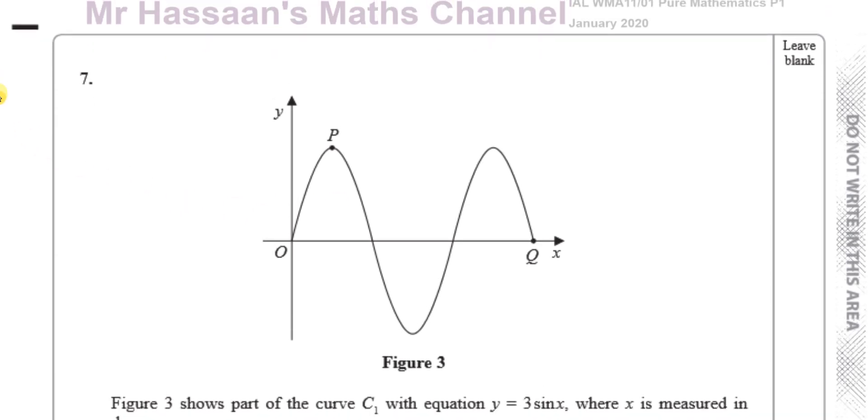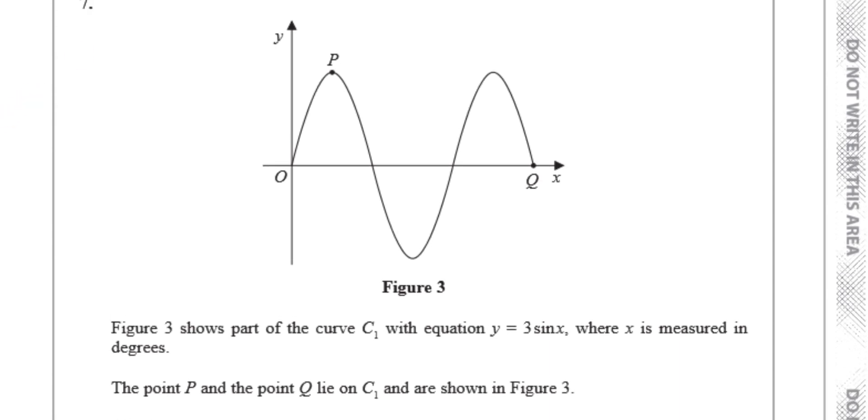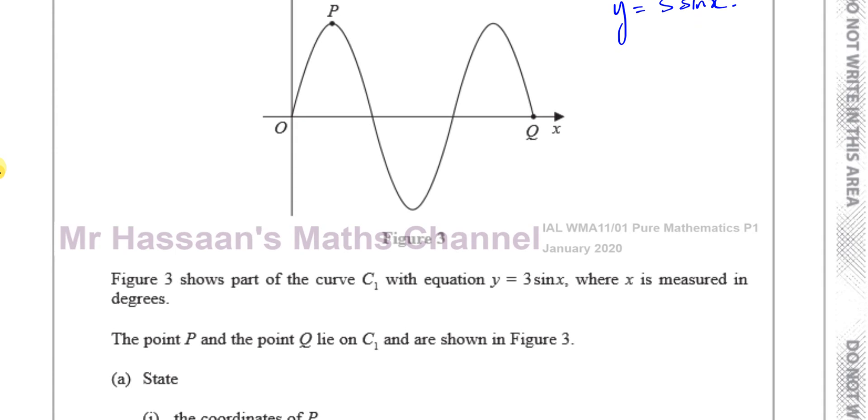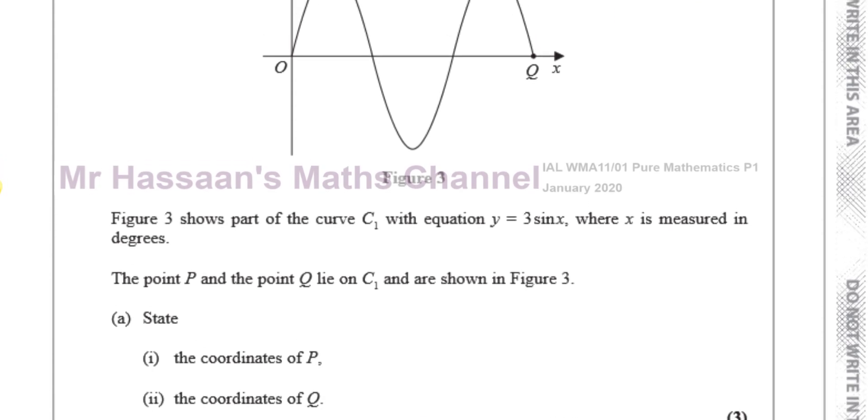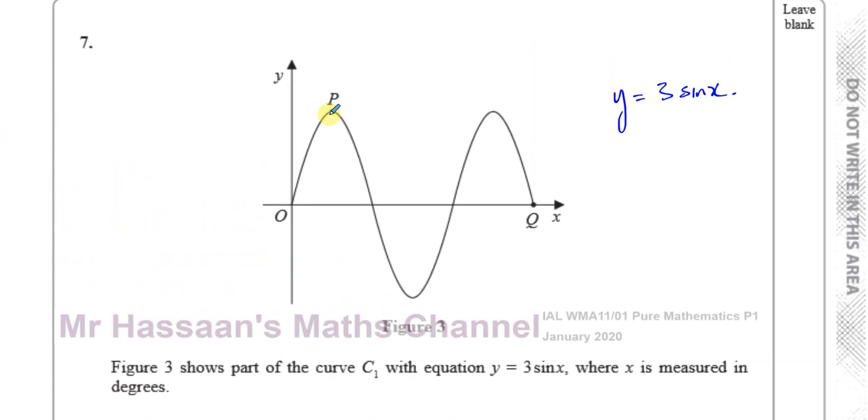Here we're told about figure 3 which shows part of the curve C with equation y = 3sin x, where x is measured in degrees. The point P and the point Q lie on C and are shown in figure 3. We've got to work out the coordinates of P and Q.